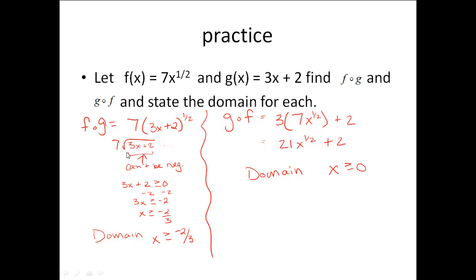Now, when I was looking for my domain, I had to think to myself, I have this even root and I cannot have the inside of that be negative. So really, this 3x plus 2 has to be greater than or equal to 0 because if it, as a group, is negative, I would get i's.